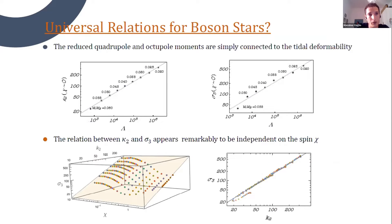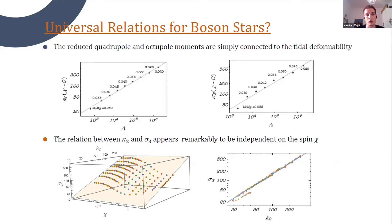We also found that the reduced quadrupole and octupole moments are simply connected to the tidal deformability of these objects. In particular, if you take the reduced quadrupole and octupole moment as a function of tidal deformability on a log scale, this relation appears to be linear, and the relation between the quadrupole and octupole themselves could be a hint of a universal relation — which could hold for boson stars as such relations are known to hold for neutron stars.